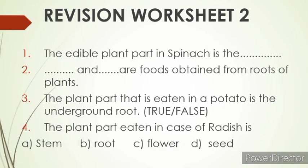Now moving on to the second worksheet. Question number one is: the edible part of the spinach is — you have to write the name. The second one: dash and dash are foods obtained from roots of plants. You have to write the names of the two plants from which we derive food from the roots. Number three is: the plant part that is eaten in a potato is the underground root — true or false? You have to tell us whether it is true or false.